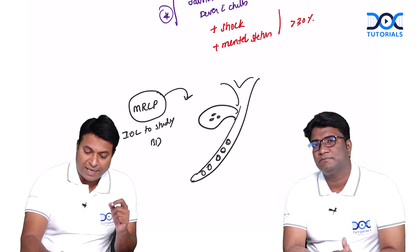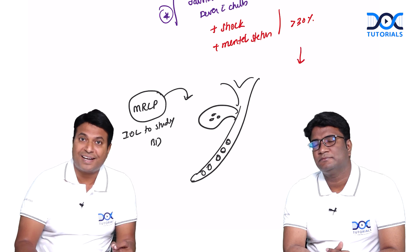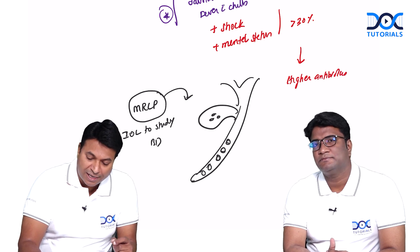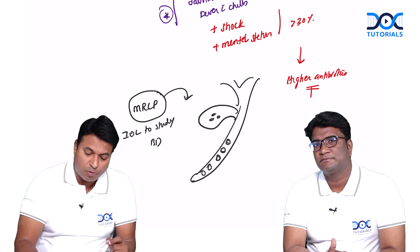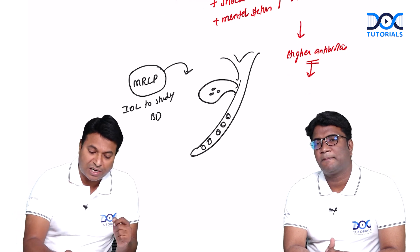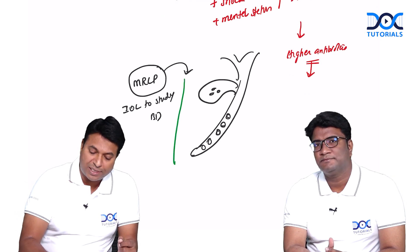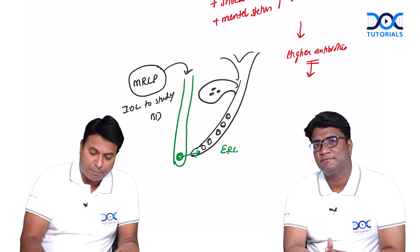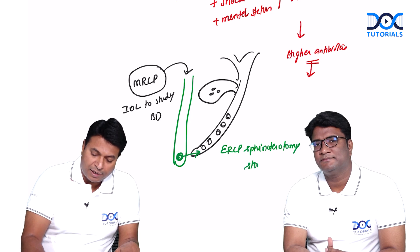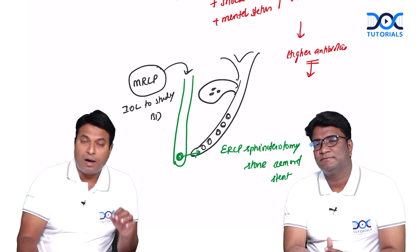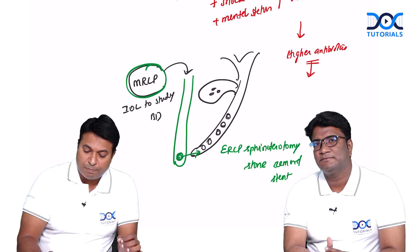Once MRCP confirms stones, the moment I see such a cholangitis patient I should start third-generation cephalosporins and piperacillin-tazobactam — higher antibiotics are started immediately. After starting antibiotics, I should call the medical gastroenterologist to perform an emergency procedure: using a side-viewing scope, they go inside, do a sphincterotomy, and remove the stones — known as ERCP sphincterotomy. Stone removal and stenting should be done to save the patient from cholangitis. After MRCP, we go for ERCP.